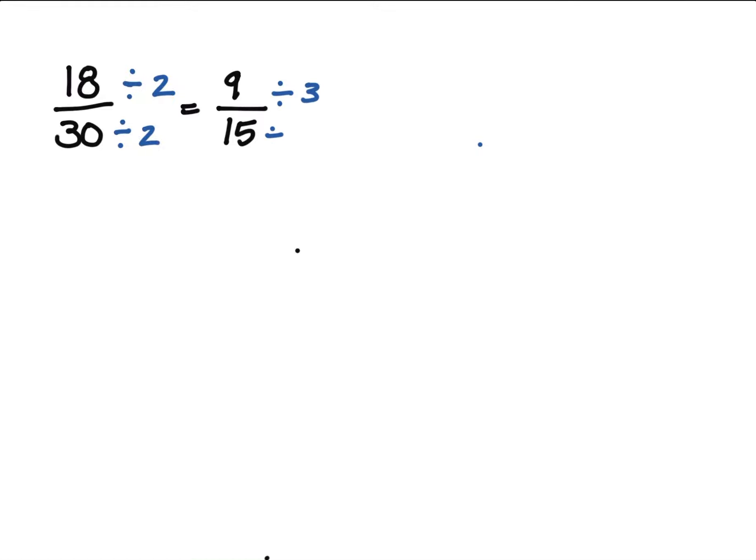So now we're dividing each number by 3. 9 divided by 3 is 3, and 15 divided by 3 is 5.